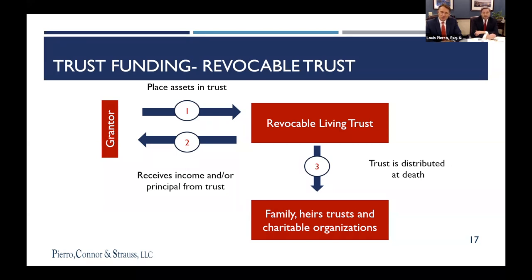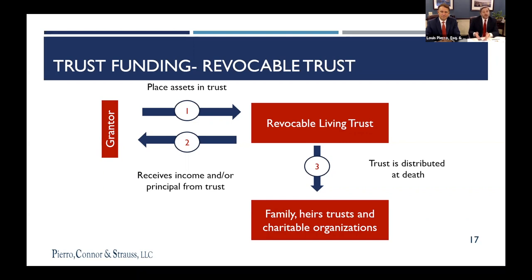A lot of attorneys used to think that having a will and going through probate was a more secure way to distribute assets — if you had potential contests or knew you were disinheriting a child. But now I think the opposite is true. If you're going to have a contest, it's much more difficult to contest a trust. They have to hire a lawyer, plunk down a retainer, petition a court, and the burden is on them. When you use a will, the burden is on the person propounding the will, and if someone objects, it could be a year or two before the will is admitted to probate.